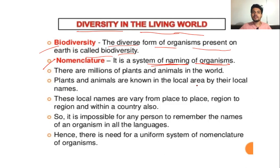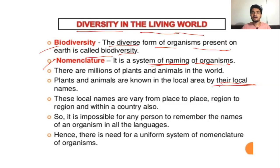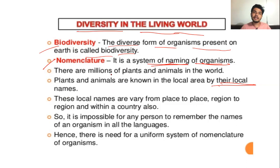Plants and animals are known in the local area by their local names or vernacular names — local name and vernacular name are one and the same thing. These local names vary from place to place, region to region, and within a country. For example, in Maharashtra there will be one name for mango and in Rajasthan they will have some other name. But scientific names are universal and the same all over the world. This is the difference between vernacular name and scientific name.